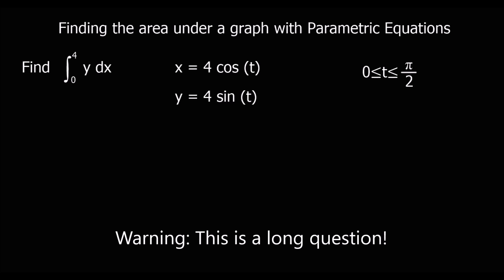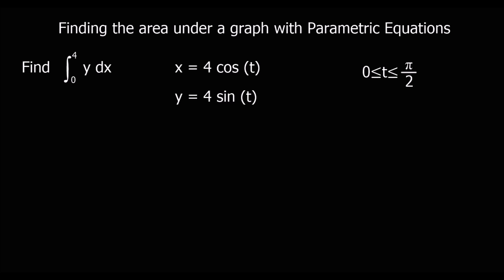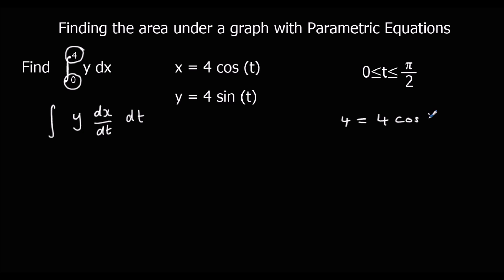Here's another question. We have parametric equations, so we change the question from integrating x's to integrating t's: y times dx/dt with respect to t. We also need to change the two x values into t values. When x is 4, using the equation linking x and t: 4 = 4 cos t, divide both sides by 4, so 1 = cos t, and cos⁻¹(1) = 0. So when x is 4, t is 0.